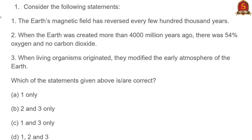Statement two says: when the earth was created more than four thousand million years ago, there was 54% oxygen and no carbon dioxide. This is a pattern in most UPSC questions — the use of words like 'no,' 'only,' 'all,' which represent complete negation. Logically, carbon dioxide plays an extraordinary role in global warming even at miniscule percentages. The statement saying there was absolutely no carbon dioxide is logically incorrect. So statement two is wrong, and options B and D are eliminated.